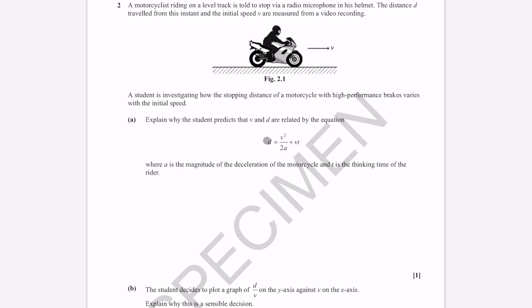So d over here is the stopping distance, which is the sum of the thinking distance, which is just vt, and v squared over 2a will be the braking distance.